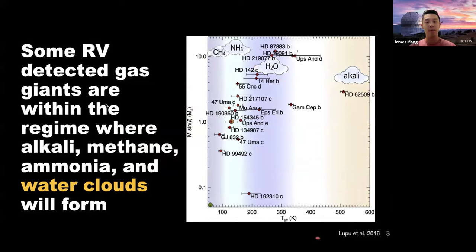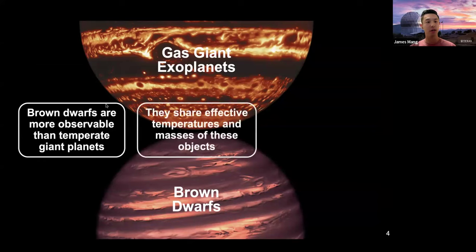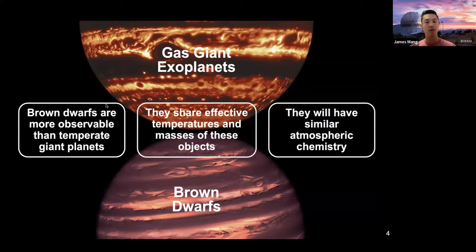The question then is how can we study the atmospheres of these objects, especially with these volatile clouds and the different atmospheric dynamics, as we prepare for JWST observations? We can actually use brown dwarfs for this. Brown dwarfs are perfect analogs — they are much more observable than temperate giant planets, since we don't have to worry about complicating stellar radiation or contamination. They share effective temperatures and masses of these giant gas giant planets and will have similar atmospheric chemistry, making them a laboratory to test our atmospheric models and then use them as predictive models for gas giant exoplanets.